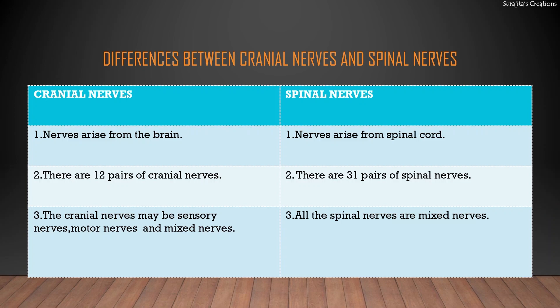Now let us look at the differences between cranial nerves and spinal nerves. Cranial nerves arise from the brain, whereas spinal nerves arise from the spinal cord. In terms of number, there are 12 pairs of cranial nerves, whereas there are 31 pairs of spinal nerves. Regarding their nature, cranial nerves may be sensory, motor, or mixed, whereas all spinal nerves are mixed nerves.